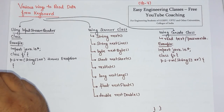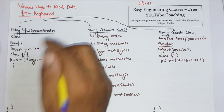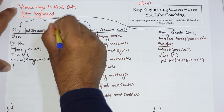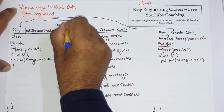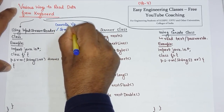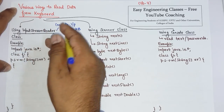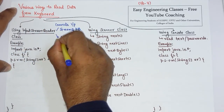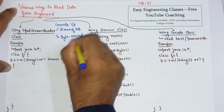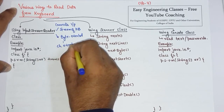The InputStreamReader class can be used to read data from the keyboard. It actually performs two tasks: it connects the input stream of the keyboard, and it converts the byte-oriented stream into a character-oriented stream.